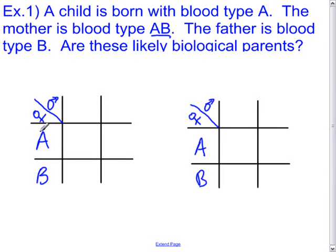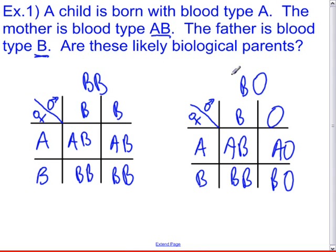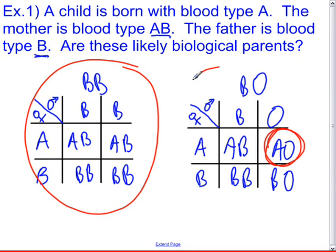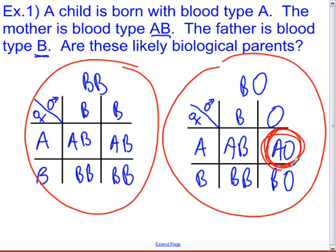The mother is type AB, so her Punnett square setup stays the same. Since we don't know if the father is homozygous or heterozygous for type B, we need to do a Punnett square for each. The child is blood type A. There is a possible blood type A outcome if the father is heterozygous B, but none if the father is homozygous B. So although it's only a one-in-eight chance across all possibilities, we can say it is consistent — there is nothing to rule out the father as a biological contributor.